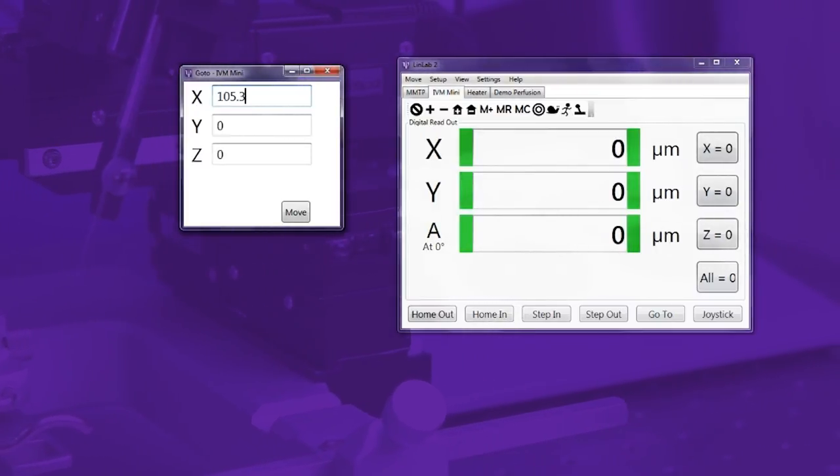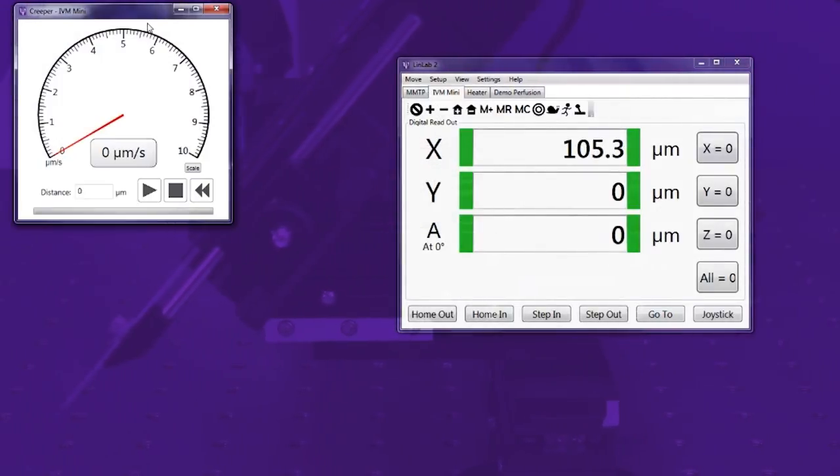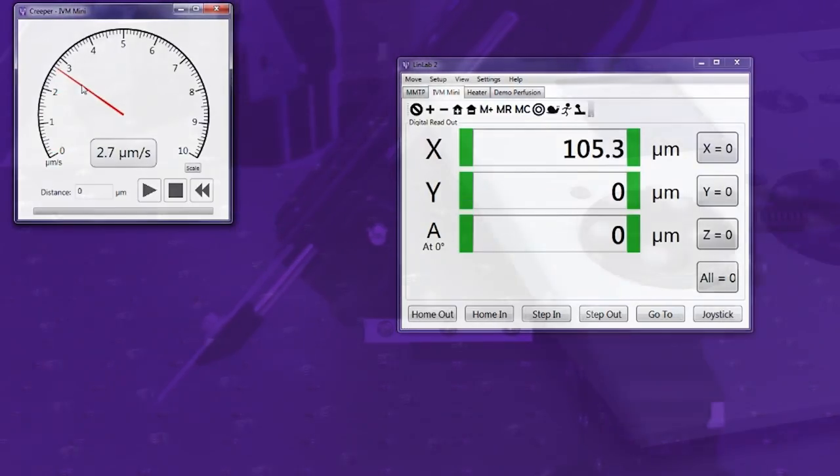Using the software you can visualise positional information, set numerous memory positions and customise your speed settings. The software also includes the unique creeper function. This allows the probe to creep to a desired position at a predefined speed.